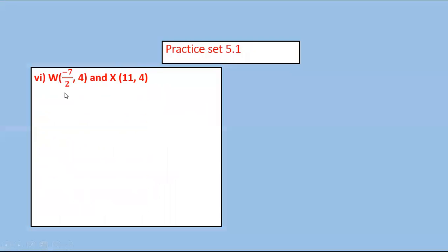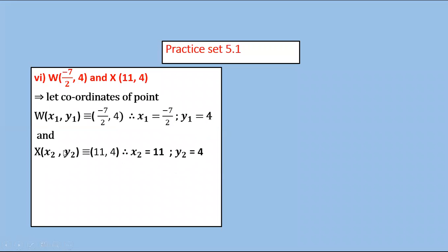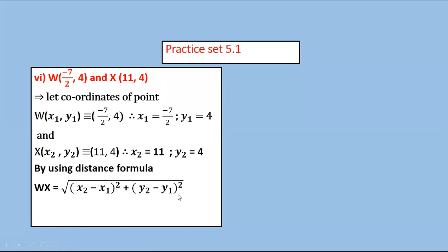Find the distance between two points W(−7/2, 4) and X(11, 4). Let W be x1, y1, so x1 = −7/2, y1 = 4. Let X be x2, y2, so x2 = 11, y2 = 4. By using the distance formula, WX = √[(x2−x1)² + (y2−y1)²].